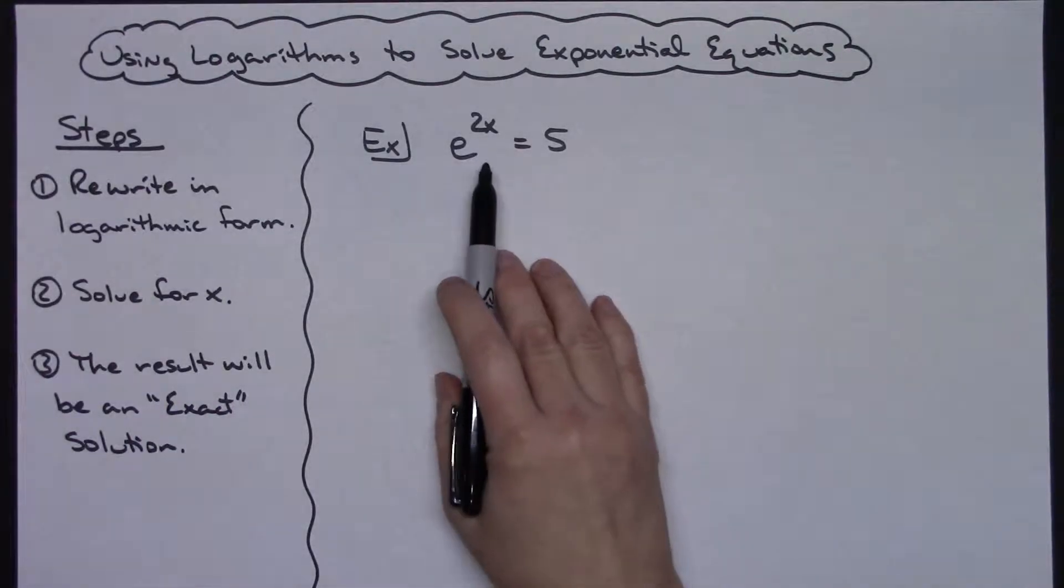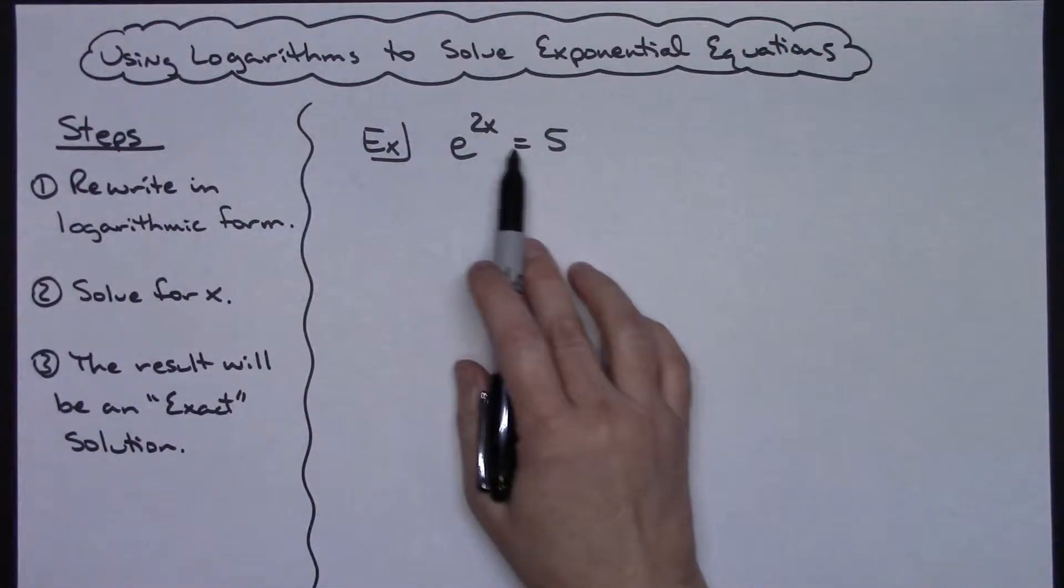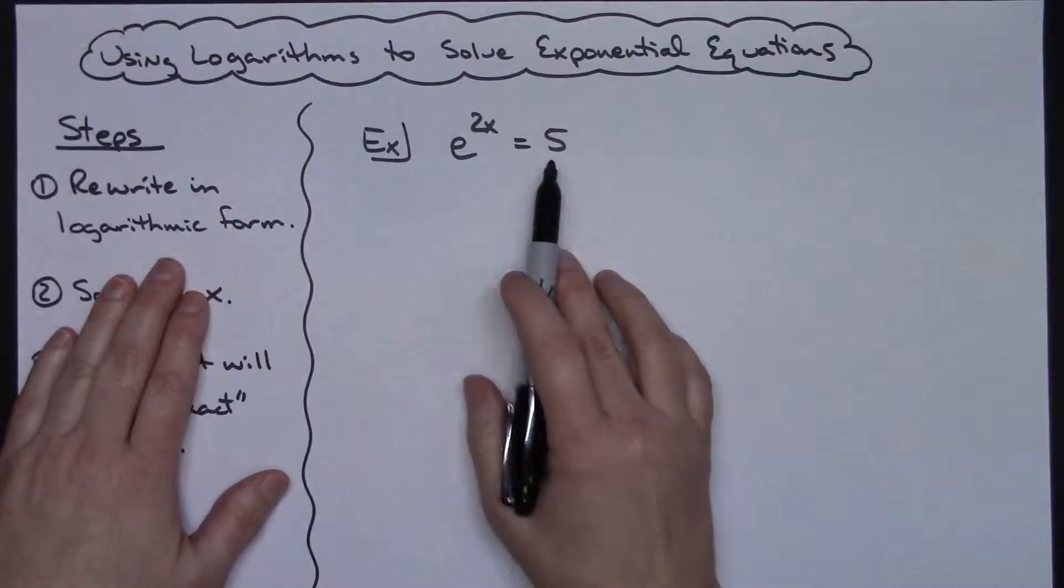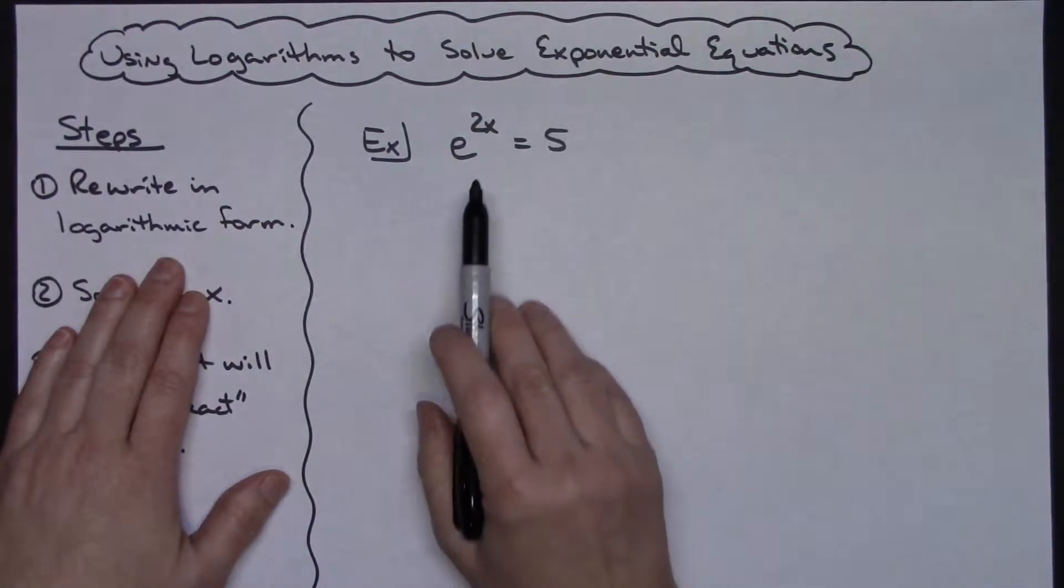So let's do that to this example right here. I've got e raised to the 2x equals 5. The very first thing I need to do is write this in logarithmic form. So I have to go back and forth between exponential and logarithmic form.